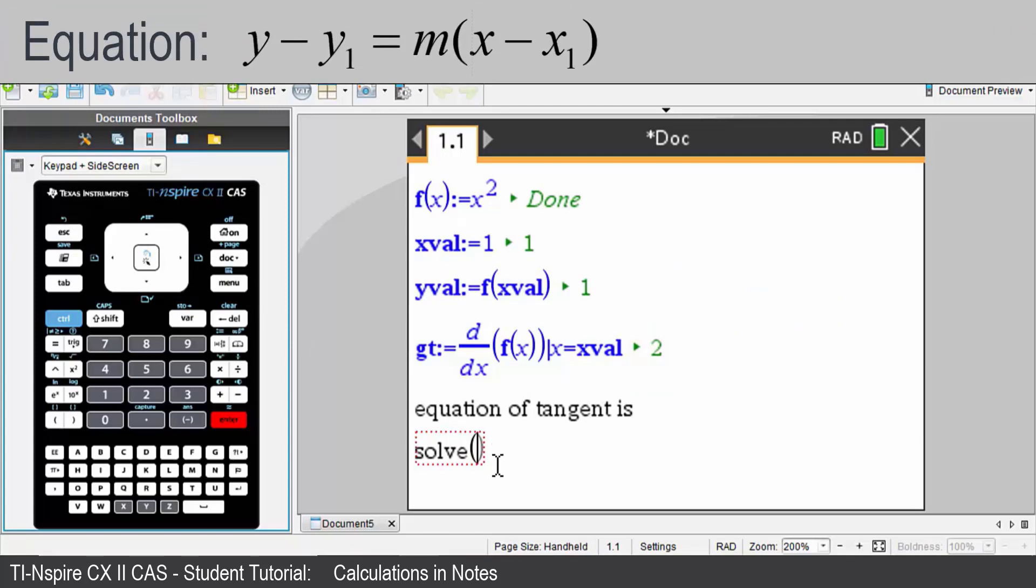We're going to solve y minus your yval. So we can access that from the var key. Equals the gradient of the tangent. So var key again, gt. x minus my xval. Once again under the var key.